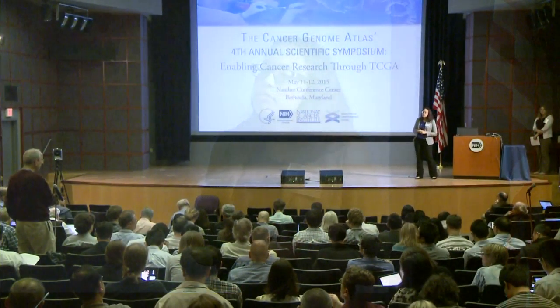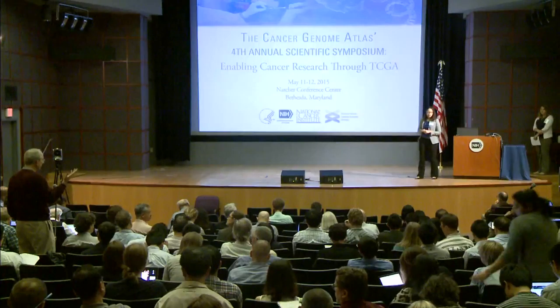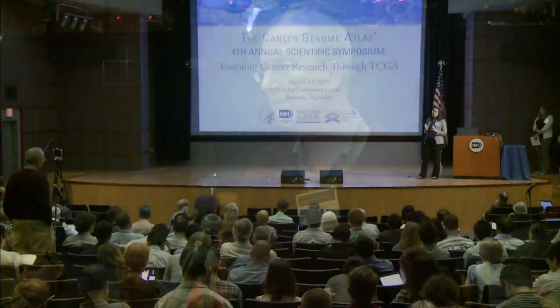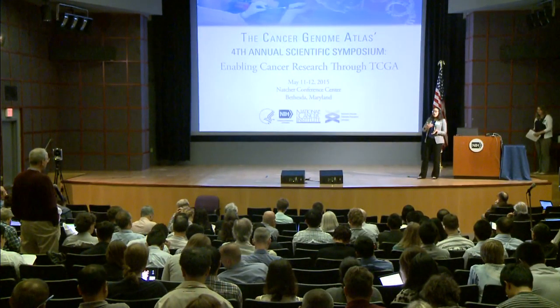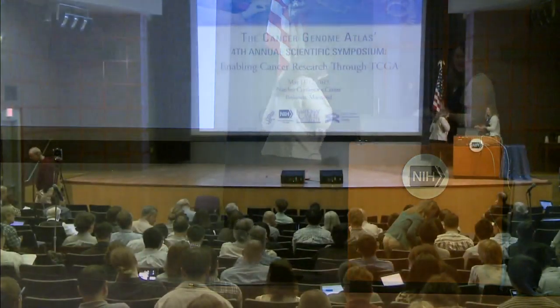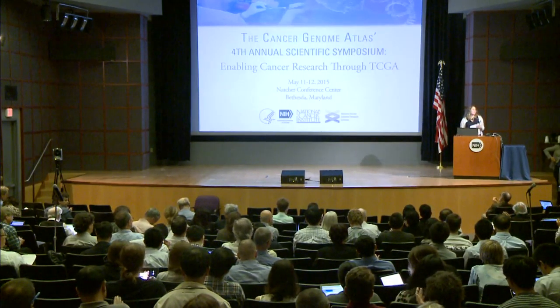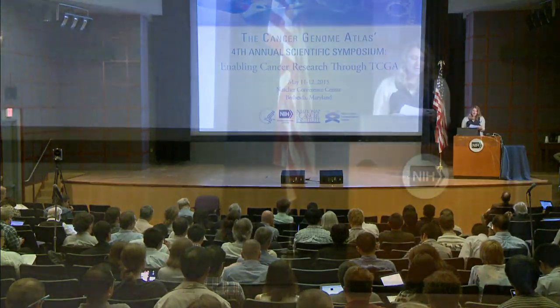How are you going to deal with real lineage-specific effects or things that require the presence of other oncogenes that are mutated but not present in your test system? We really understand that there are a lot of context effects, and when we assay them, we'll have to take those into consideration. Thanks. Our next speaker is Synta Wu from Brown University, who will tell us about COMET, a statistical approach to identify combinations of mutually exclusive alterations in cancer.